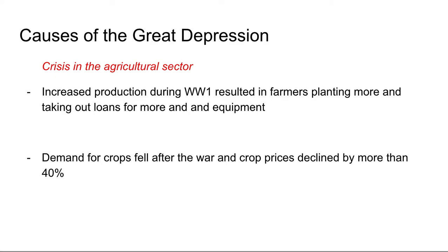The next cause: crisis in the agricultural sector. Agriculture has always been a key portion of the United States economy — we rely on it for the bulk of goods we consume day-to-day, so if farmers struggle, we all struggle. Increased production during World War I resulted in farmers planting more and taking out loans for more land and equipment. Once the war stopped, that gigantic demand to feed all the soldiers fell through. Crop prices inevitably declined by more than 40%.